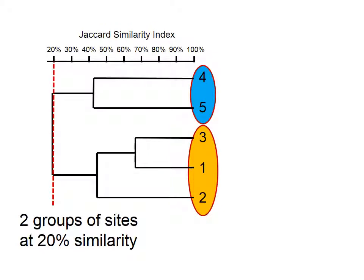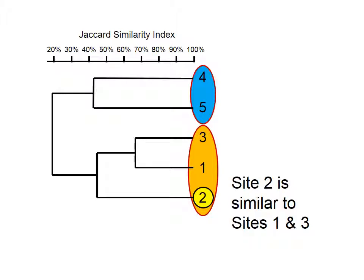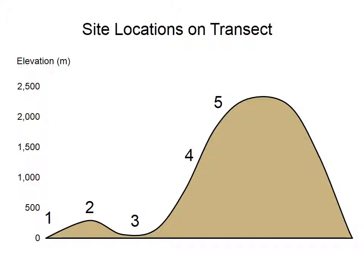The dendrogram shows groups based on similarity linkages. This dendrogram has two big groups, and these two groups are only 20% similar — meaning the species found on sites 4 and 5 are quite different from the species found on sites 1, 2, and 3. We can refine our dendrogram further: site 2 is about 40% similar to the combined group of sites 1 and 3, making it a subset of the larger group made up of sites 1, 2, and 3. The dendrogram has been colored to emphasize the groups.